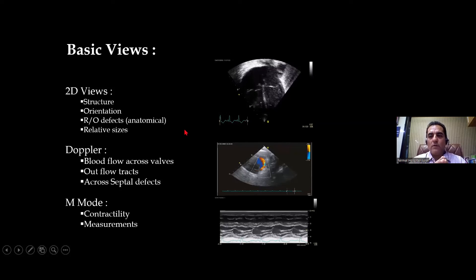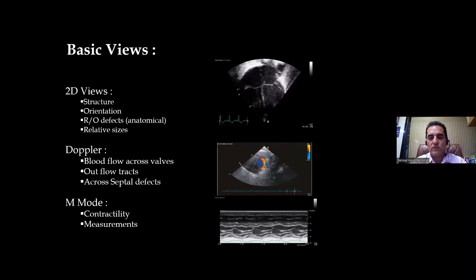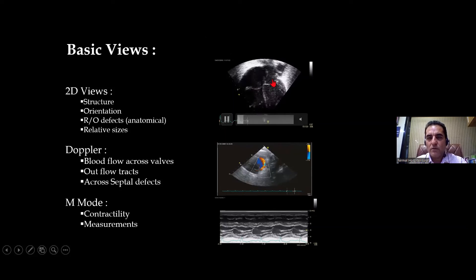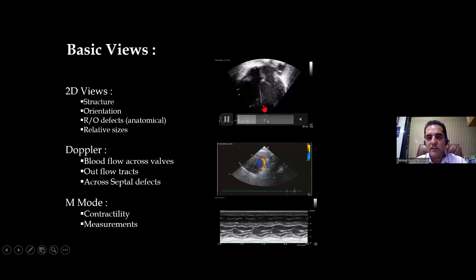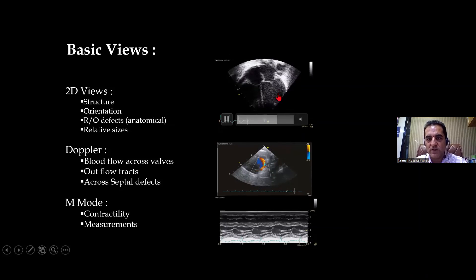Whenever we talk about the views, we always divide them into three segments. One is 2D views — as you can see, these are black and white, or grayscale views. What you see in black is mostly liquid blood, and the solid structures are gray or white. More solid and more dense appears more white; less solid and less dense appears less white. That depends upon the echogenicity of the structure — that is how our view will look like when we talk about 2D views.